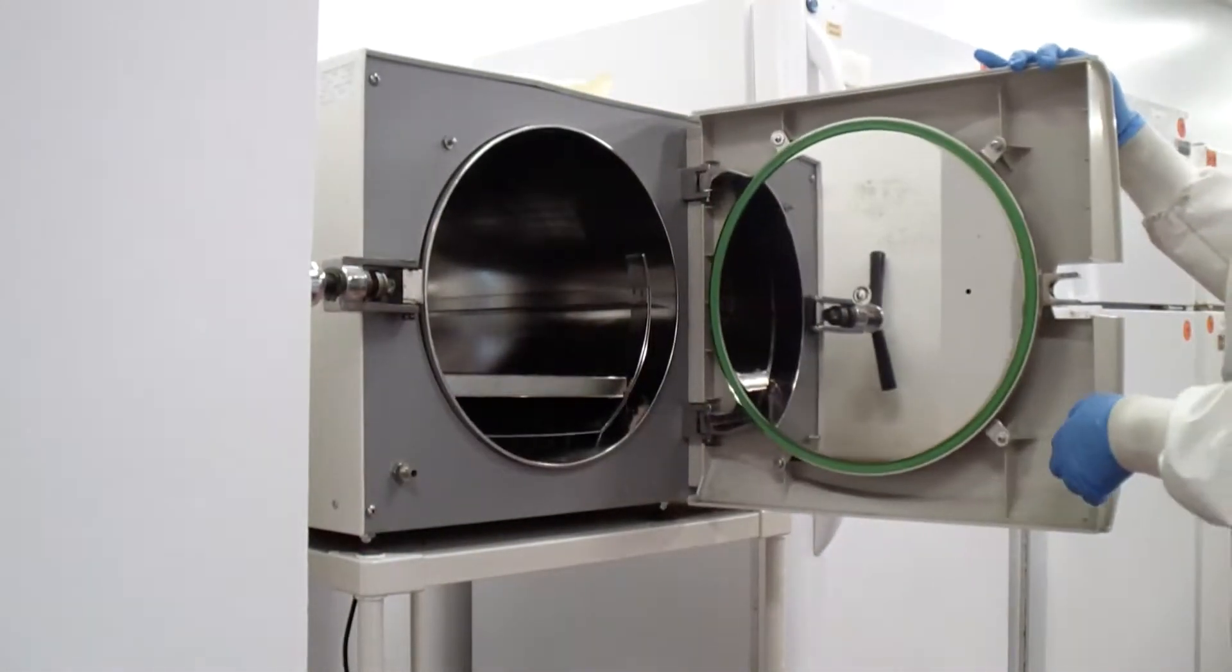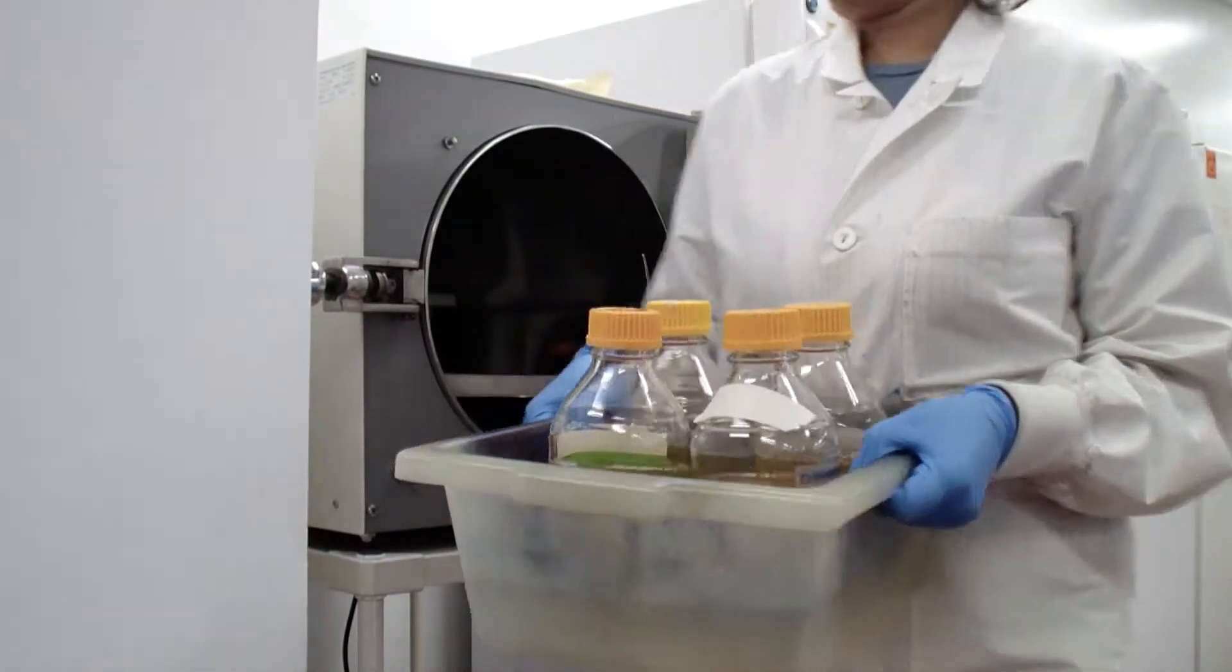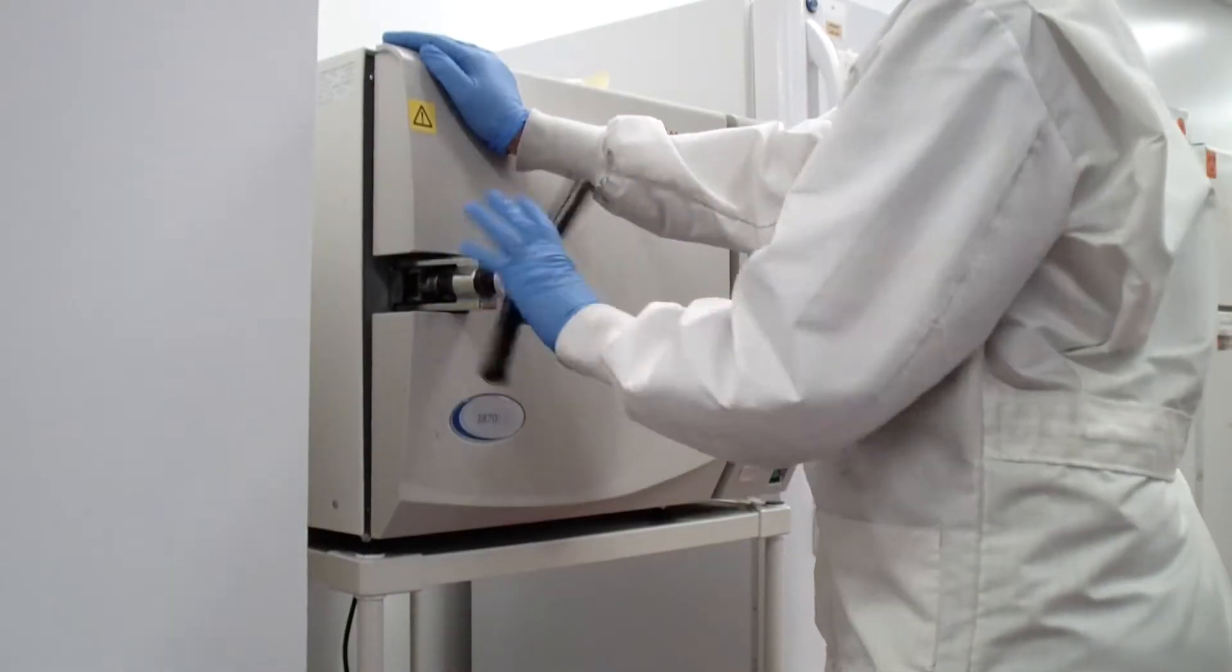An autoclave is a device that sterilizes media and tools by subjecting them to high heat under pressure. A container with some water and the bottles with medium is placed in the autoclave and the door is closed tightly so that the pressure can build up.